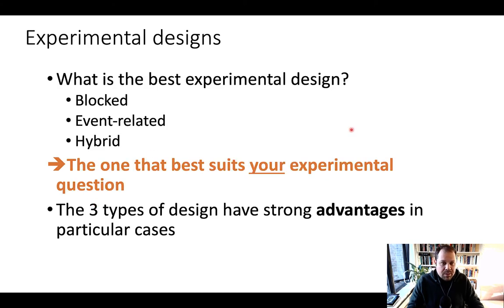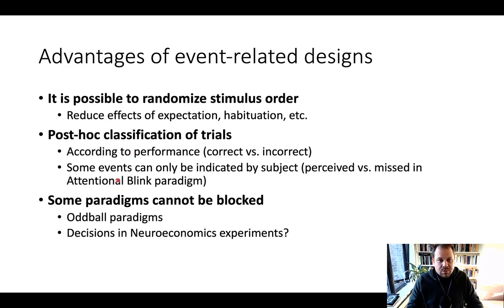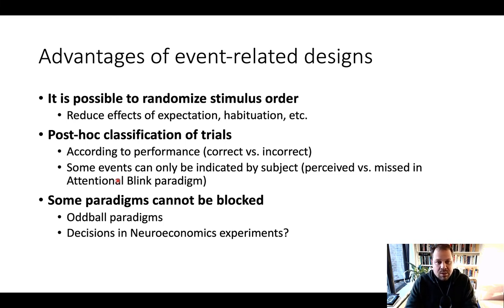So what's the best experimental design for your study? It really depends on what best suits your experimental question. You have to choose among these three, and each one has strong advantages in particular cases. The advantages of event-related designs are that you can randomize stimulus order, which makes it more interesting for the experiment. It reduces expectation, habituation, fatigue, and boredom, so this is a much more involved experiment and that's why these are commonly used.